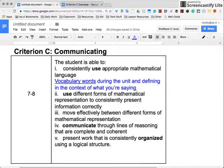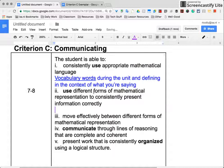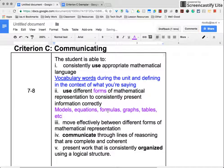The second one will be: use different forms of mathematical representation to consistently present information correctly. So we've talked about what mathematical forms are. Forms are really models, they are like the algebra tiles that we were just using. They're models, they are equations, formulas, graphs, tables. So those are all different types of forms of mathematics. Make sure that you are using multiple different types of representation to present your information. Models, equations, formulas, graphs, tables - try to use about three or four different forms.